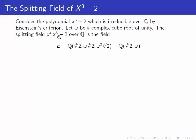So the splitting field of this polynomial over Q is the field generated by those three elements, which is the same as the field generated by the real cube root of 2 and omega.